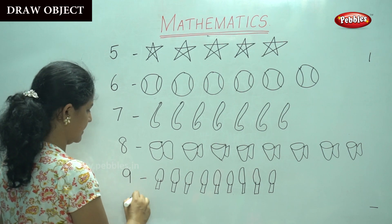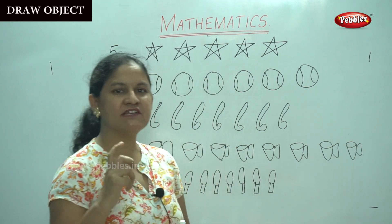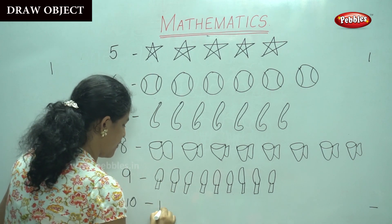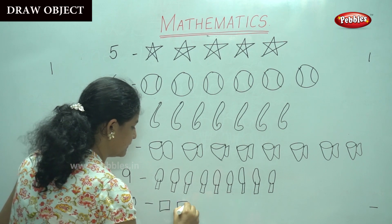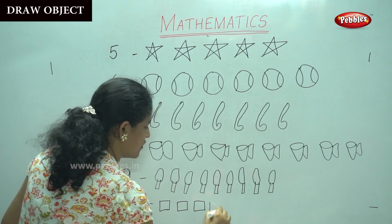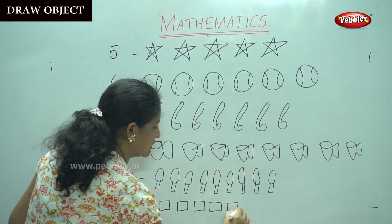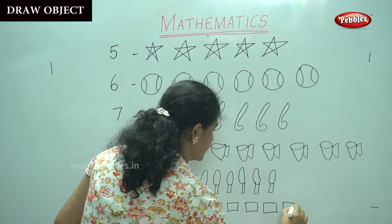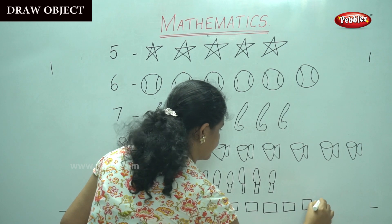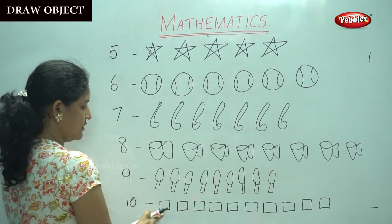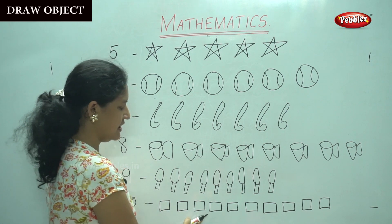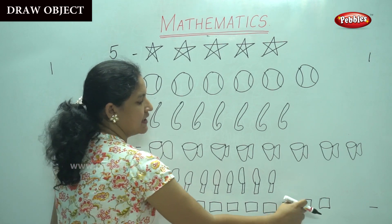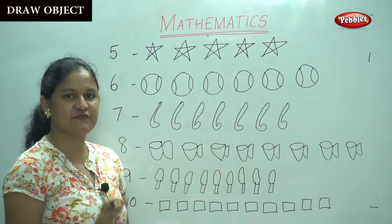And the last number, number 10. Now, I am going to draw a square for the number 10. 1, 2, 3, 4, 5, 6, 7, 8, 9, 10. Shall we count the number of boxes? 1, 2, 3, 4, 5, 6, 7, 8, 9, 10 — we have 10 objects for number 10.